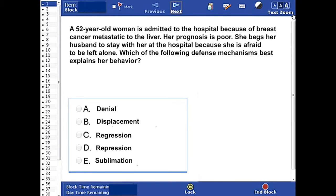In this question, we have a 52-year-old woman who is admitted to the hospital because of breast cancer metastatic to the liver. Her prognosis is poor. She begs her husband to stay with her at the hospital because she is afraid to be left alone. Which of the following defense mechanisms best explains her behavior?